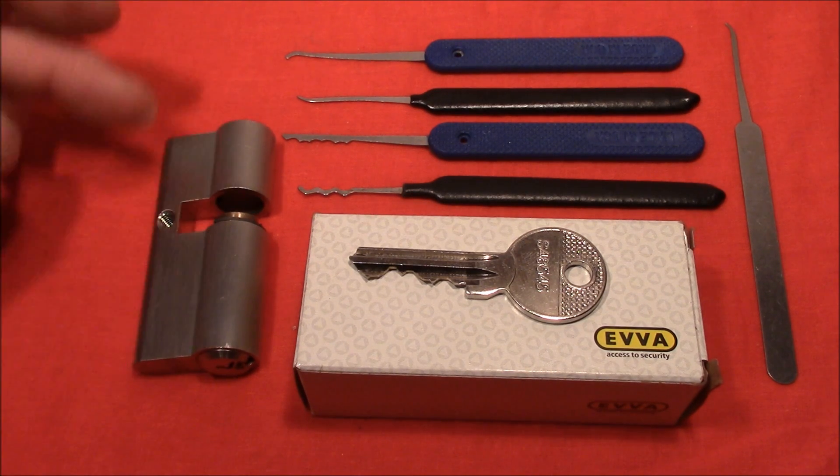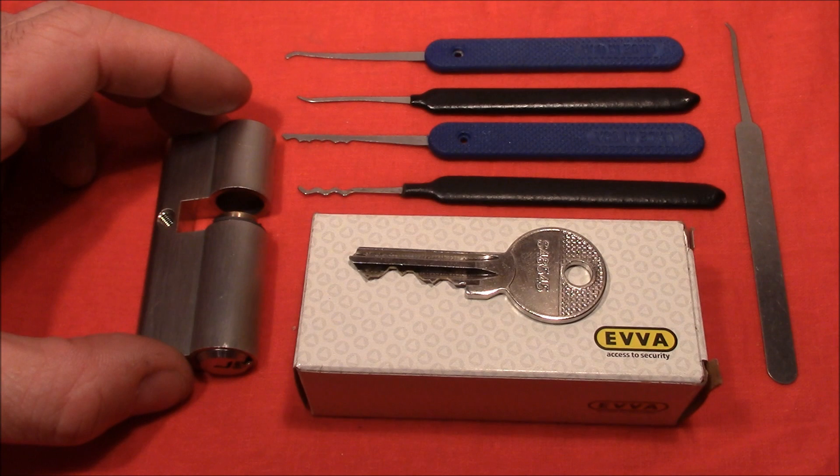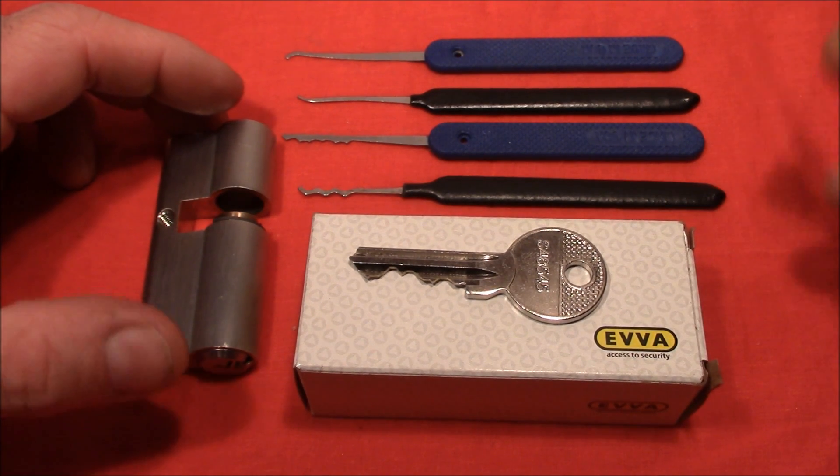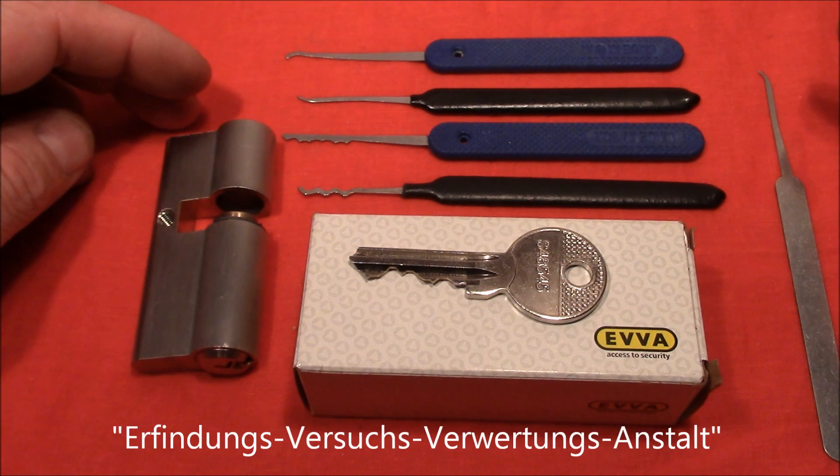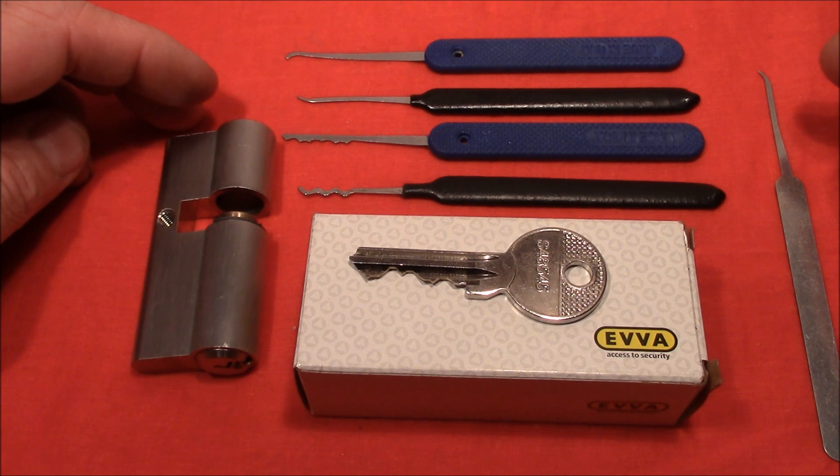Before I show you this lock in detail, just a few words about the company EVVA. EVVA is an Austrian company, not Australian, Austrian company, and it was founded in 1919. The letters EVVA actually means Erfindungsversuchsverwertungsanstalt, which means something like Invention, Experimentation and Application Institute.